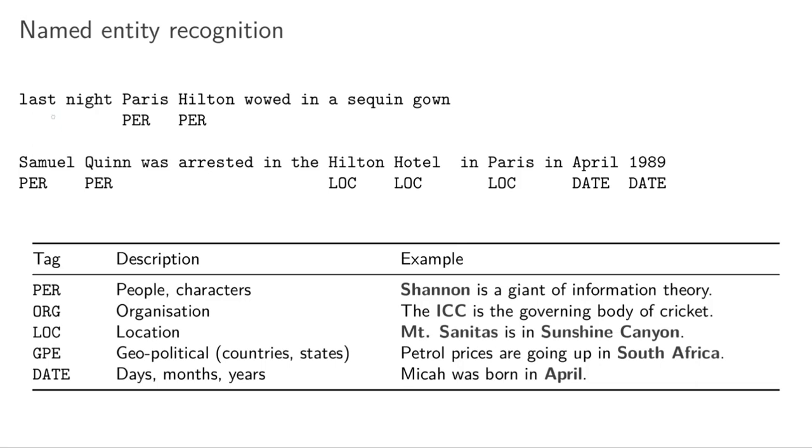Here the problem is you're given a sentence and you want to know what is the entity type for some of the words in the sentence. For instance, we've got a sentence 'last night Paris Hilton wowed in a sequined gown.' Paris Hilton here is a person, so this would be labeled as person.